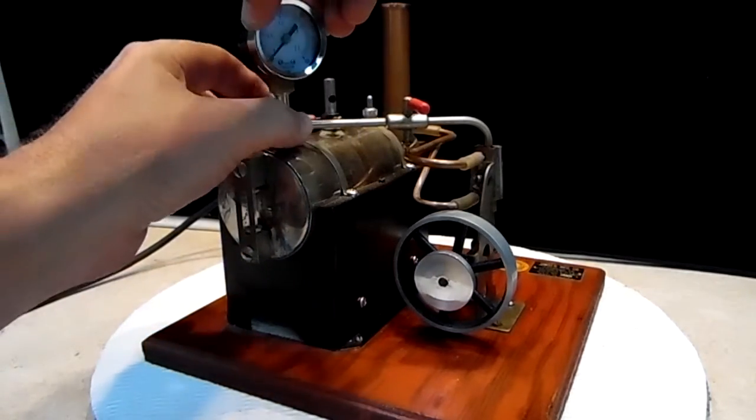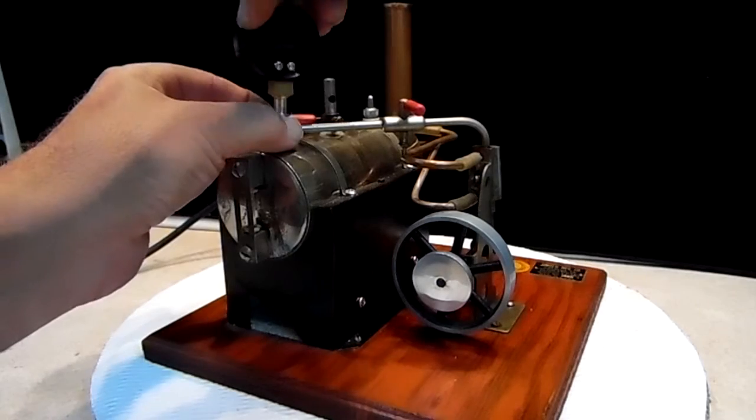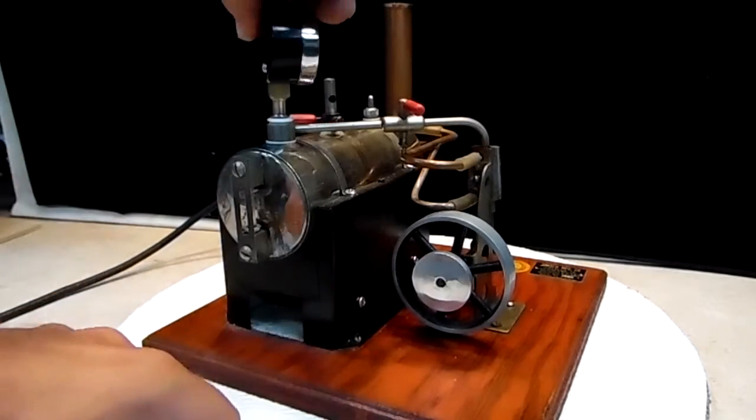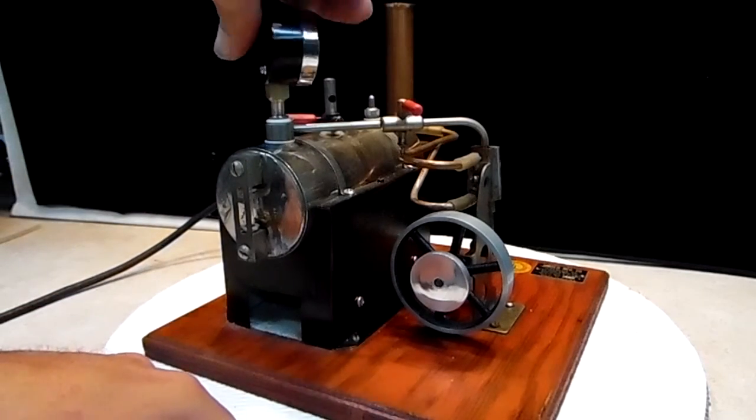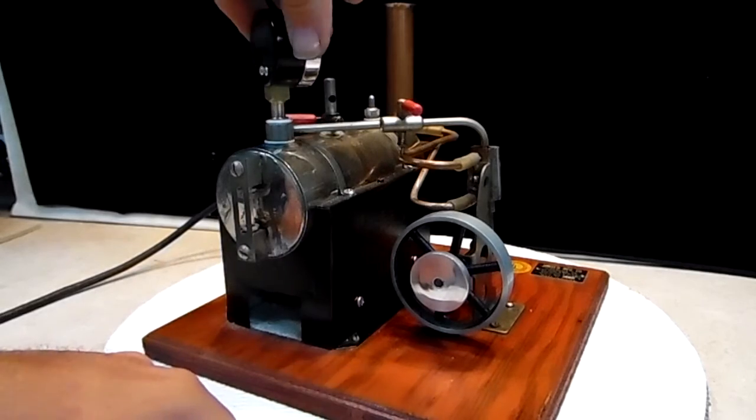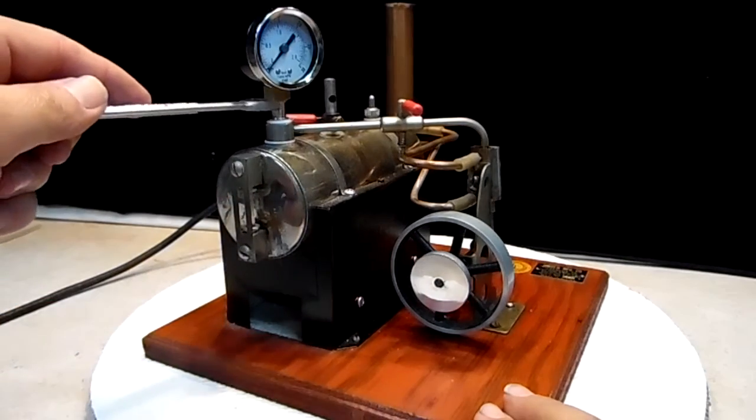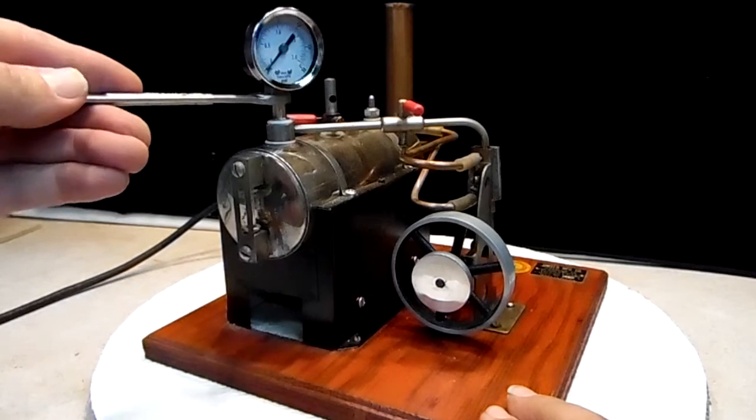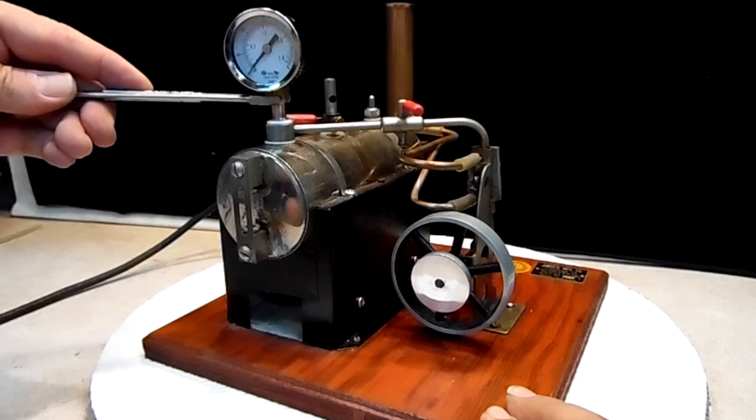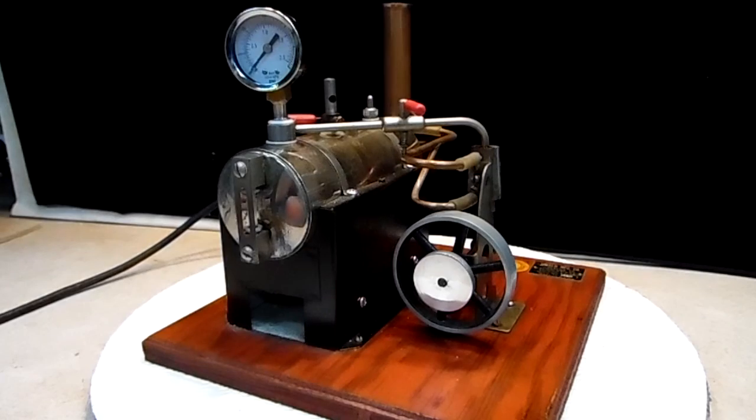And let's tighten her down. It has a 7/16 square nut under the pressure gauge. And the beauty of the Teflon gaskets is you can flatten them out, torque them down quite a bit. That's all I'm going to do until she warms up.